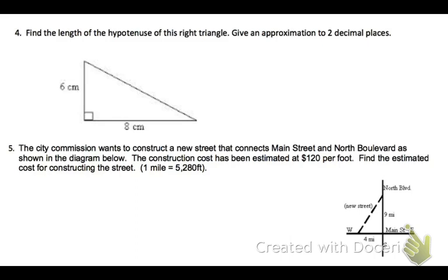Number four, find the length of the hypotenuse of the right triangle. Give an approximation to two decimal places. Alright. So, I have a right triangle, and I've got two sides. To find the third side, I'm going to use the Pythagorean theorem. I'm going to label my sides, and then just plug those in.